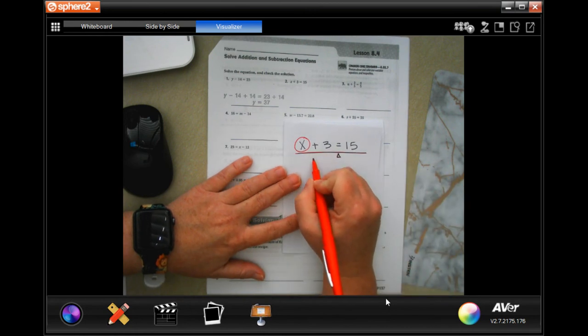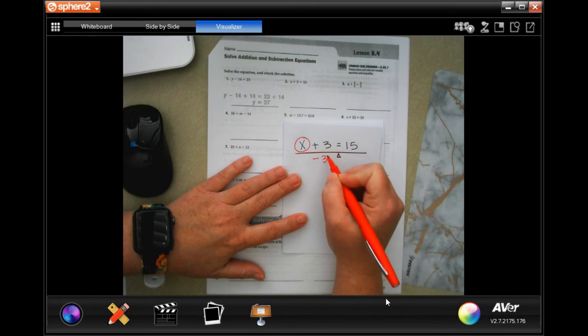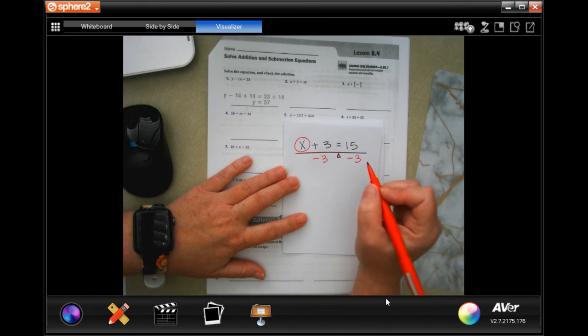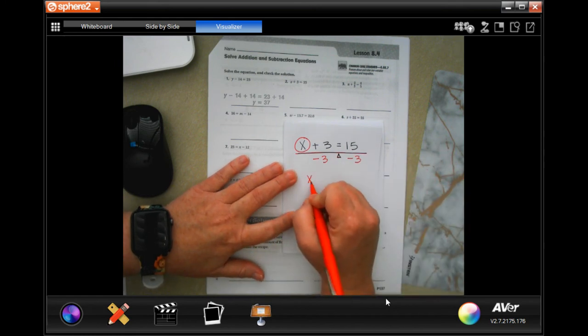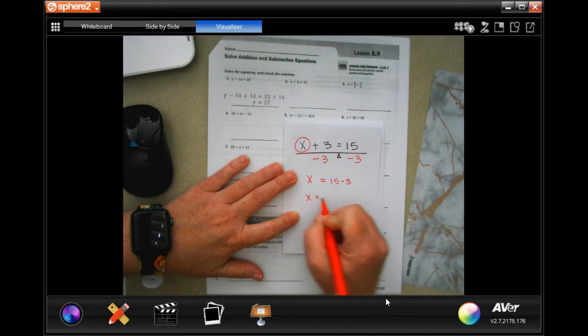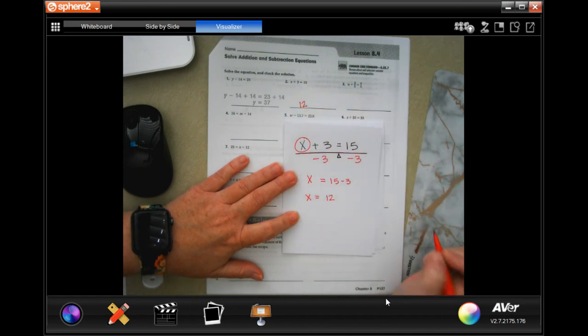In order to get x alone, I have to do the opposite of what this is so that it cancels out. If I do that over here, I need to do that over here as well. This is our teeter-totter. Now I'm left with x on this side and 15 minus 3 on this side. x then equals 12.